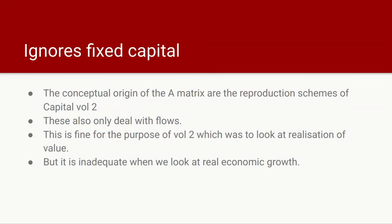Now let's talk about the fact that it ignores fixed capital. The conceptual origin of using this kind of matrix probably goes back to Volume 2 of Capital, whose reproduction schemes can be seen as similar to a set of linear equations or a matrix operation. The reproduction schemes in Capital only deal with flows. That's fine for the purpose for which Marx was discussing in Volume 2 — how the different classes of commodities that are produced have their value realised through sale. The focus was very definitely on flows because he's concerned with sales each time period. But this is inadequate when you start looking at economic growth.